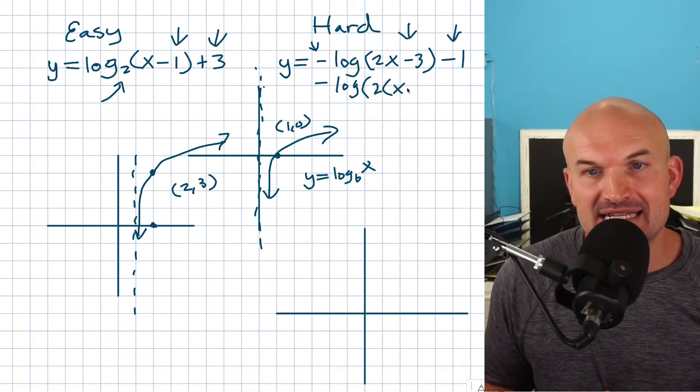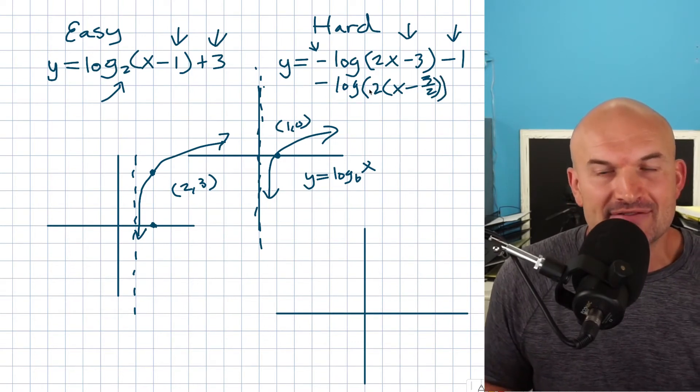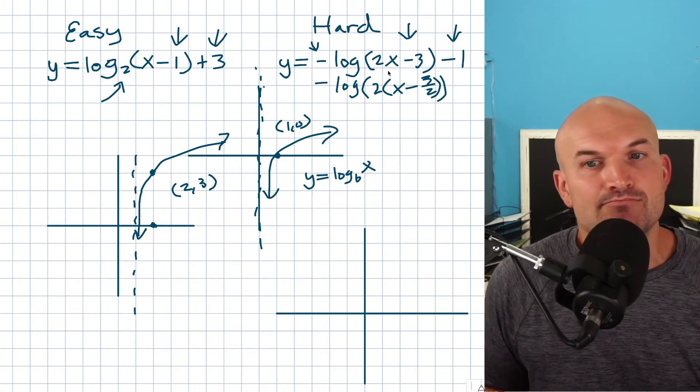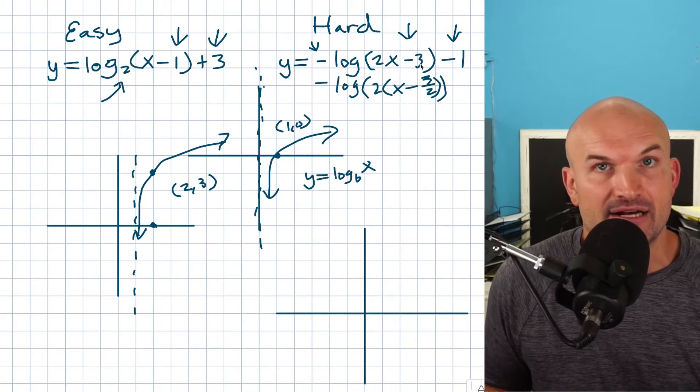So when I factor out a 2, I'm being left with an x minus 3 halves. Now why is it going to be 3 halves? The reason why it's 3 halves is because 2 does not evenly divide into 3. And remember when you factor something out, you can always multiply it back to check your answer. 2 times x is 2x. Good. 2 times a negative 3 halves is going to be negative 3.